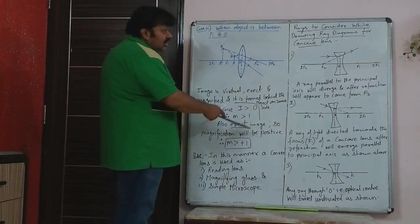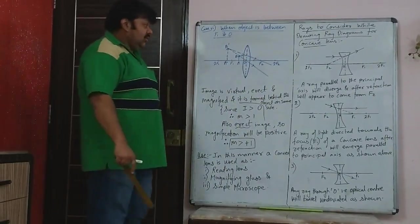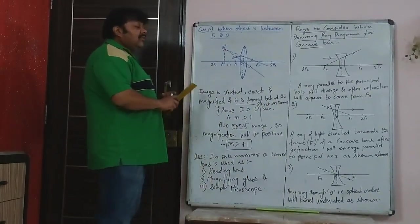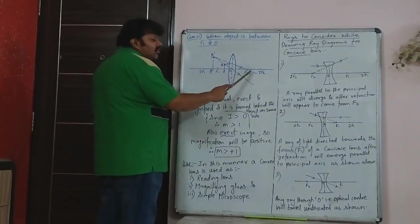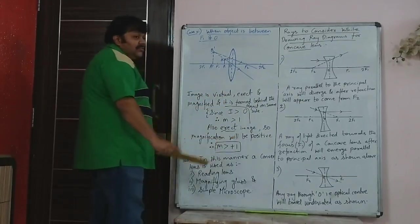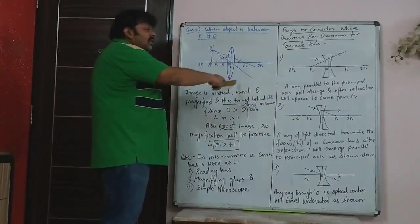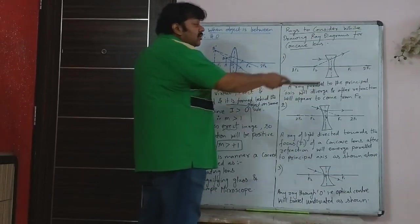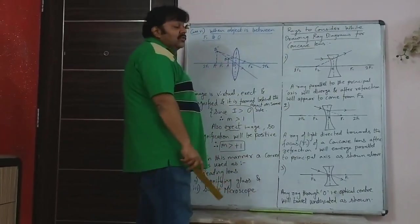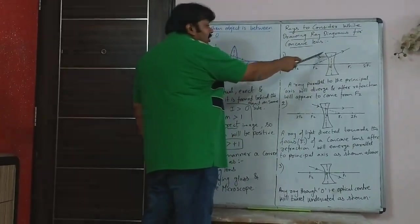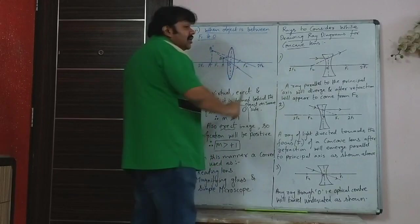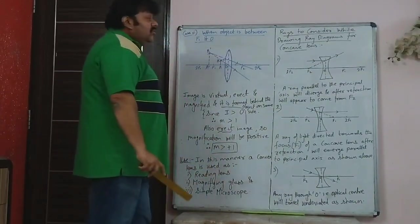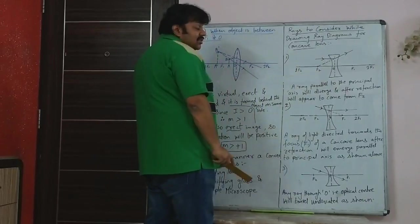Now we will start with the concave lens. Convex was converging — parallel rays go through the focus, so all rays come closer together. Concave lens is diverging. If you have a parallel beam of light parallel to the principal axis, it diverges after refraction and appears to come from the focus F2. That is shown in the ray diagram. The second ray is directed towards the focus.